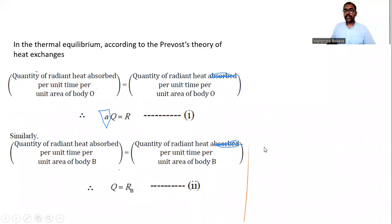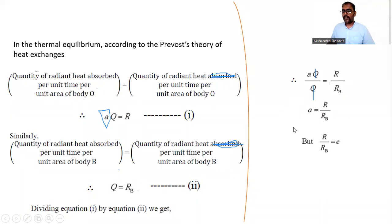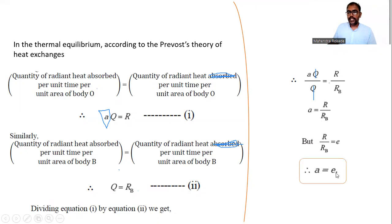Dividing equation one by equation two, Q cancels out, and we get A = R / R_B. Now, R / R_B is the ratio of emissive power of the ordinary body to the emissive power of the black body, which is the coefficient of emission E. Substituting, we get the final result: A = E. This is the mathematical expression for Kirchhoff's law of radiation.